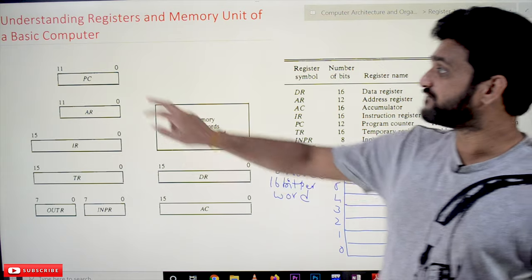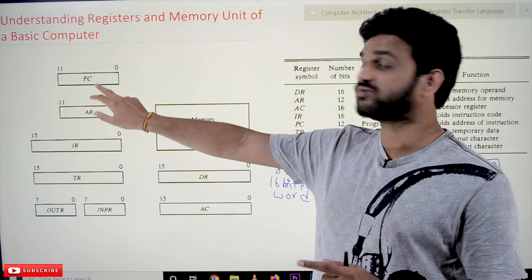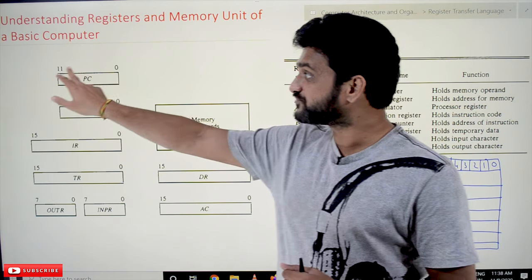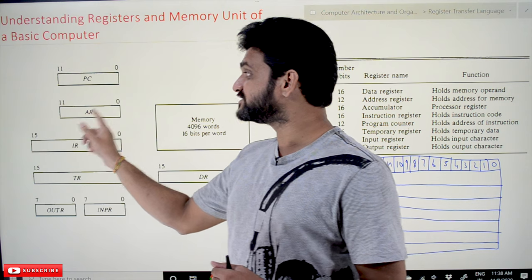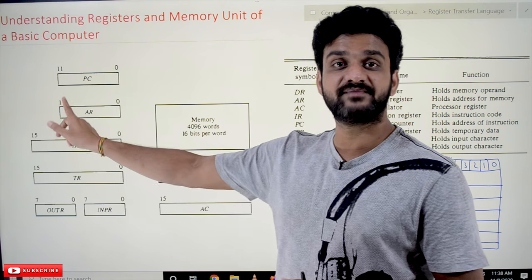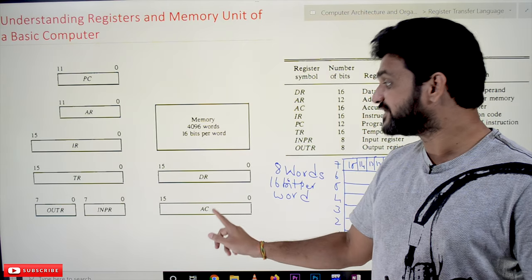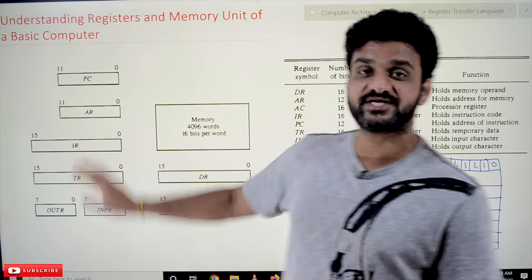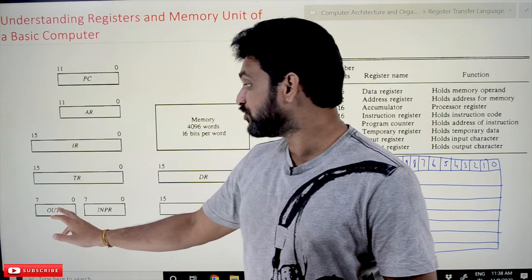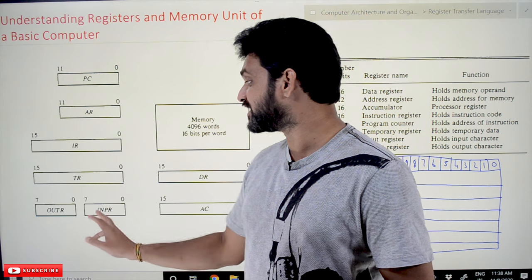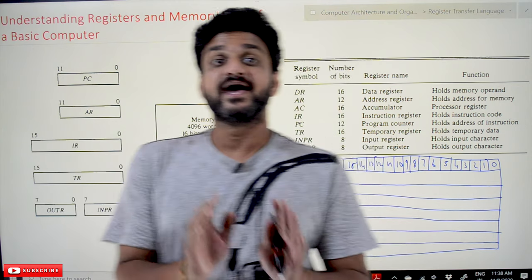We are having eight registers. The registers are PC — program counter register — and the size of this register is 12 bits. The other register is address register, also 12 bits. Instruction register, temporary register, data register, and accumulator — these four registers are of size 16 bits. And OTR and INPR, which are output register and input register, both are of size 8 bits.